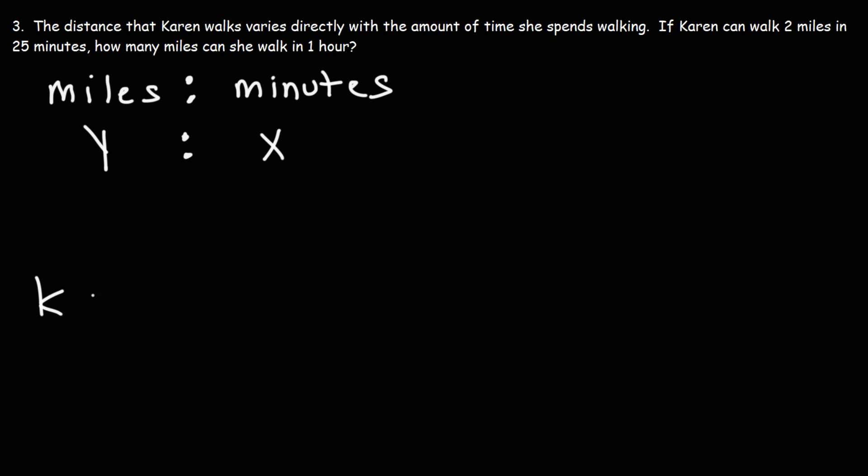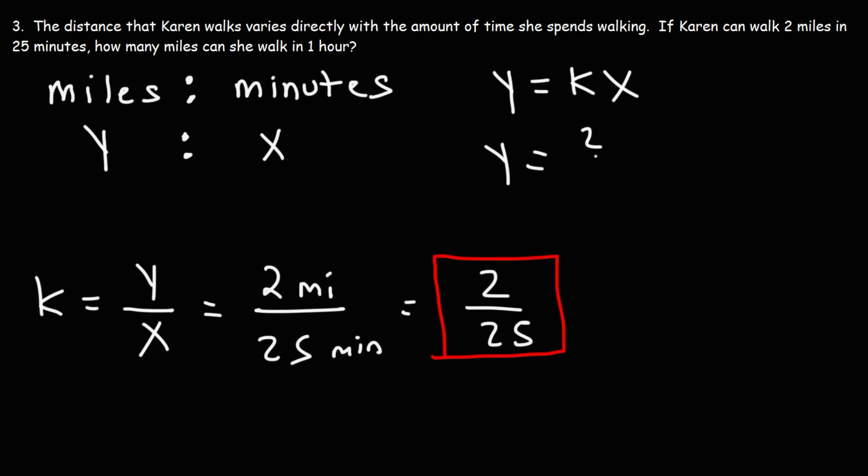So we can calculate K. K is going to be Y over X. So two miles for every 25 minutes. So K is going to be 2 over 25. So that's step one, finding the value of K. Step two is writing the equation. So Y equals KX. Let's substitute K with what it is, 2 over 25. So this is the equation.